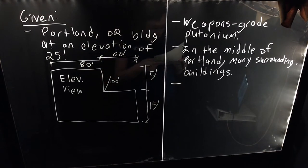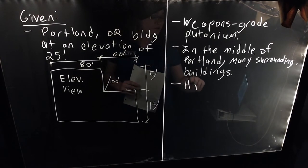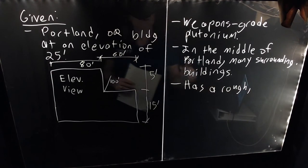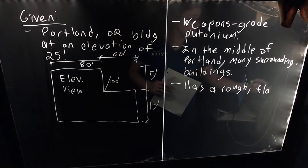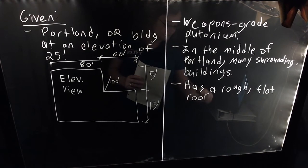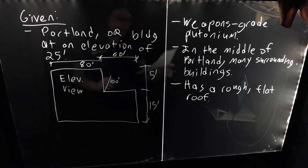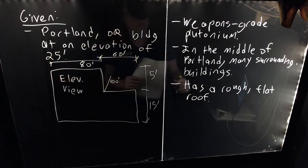So our incredibly illegal plutonium storage facility, probably located in downtown Portland, has a rough flat roof — flat enough that we can regard it as a zero-angle roof. And that's what we're going to be working with: the snow loads on this.